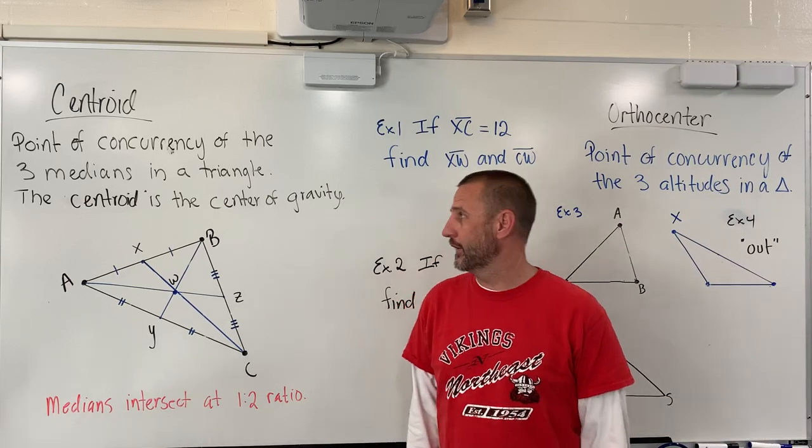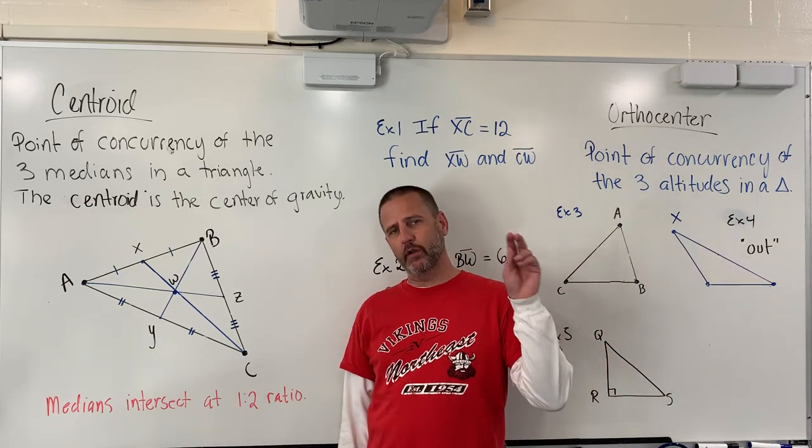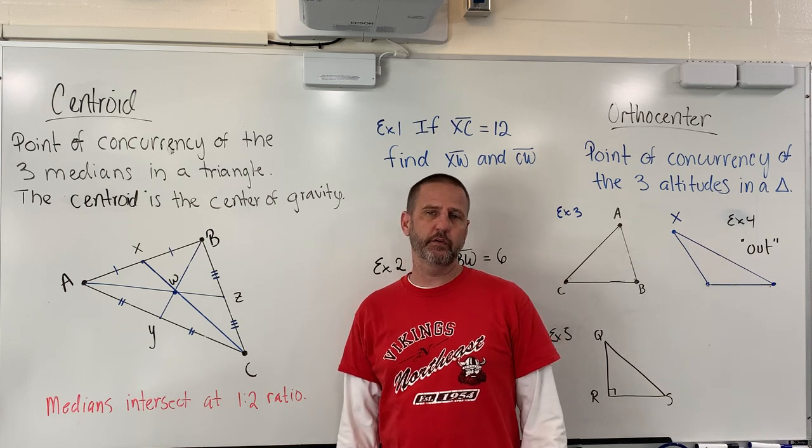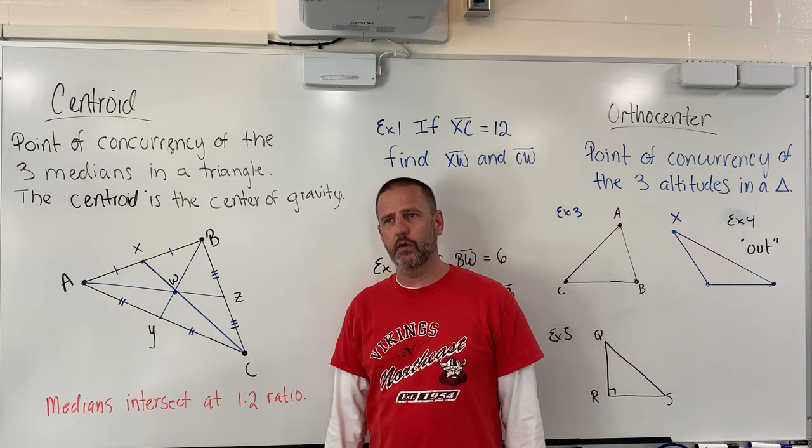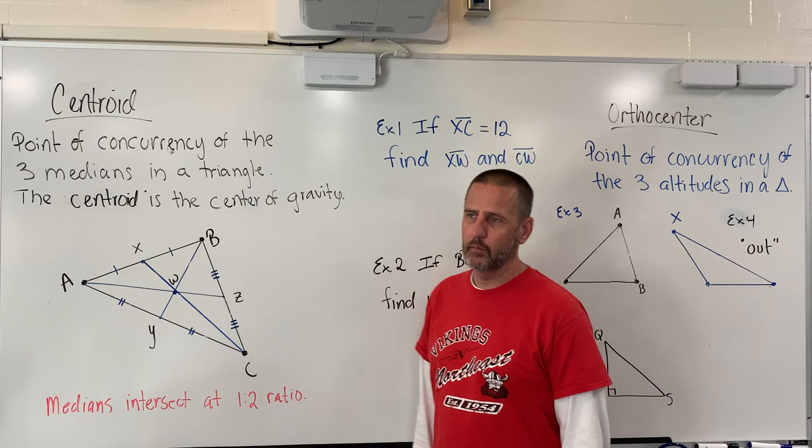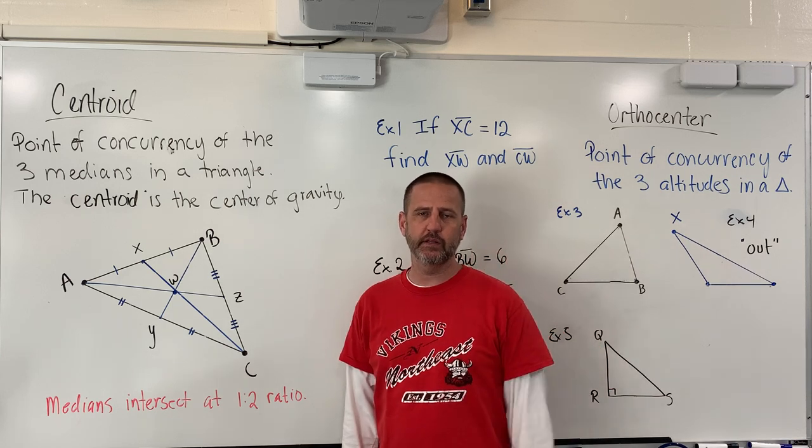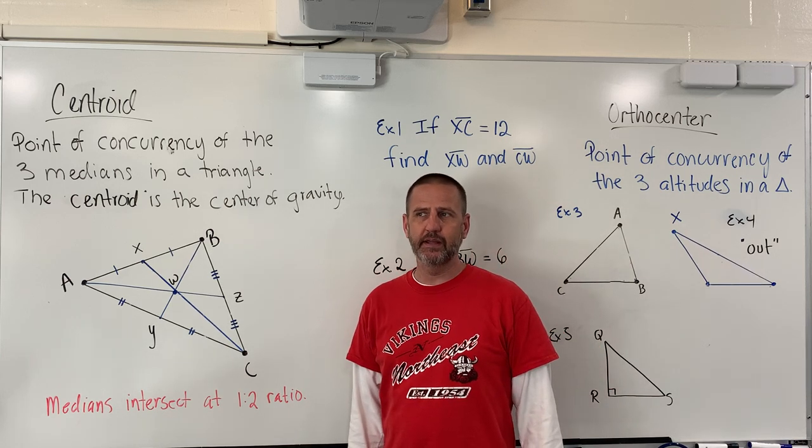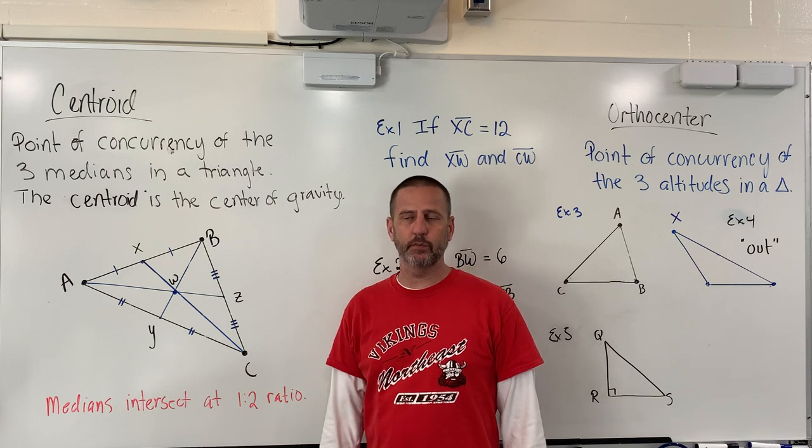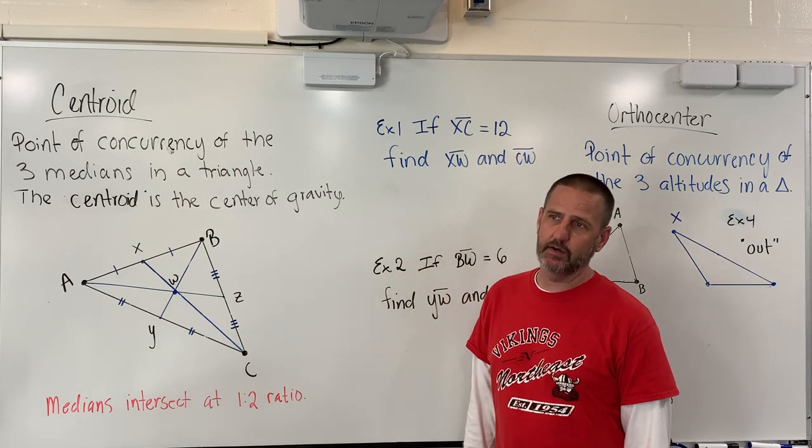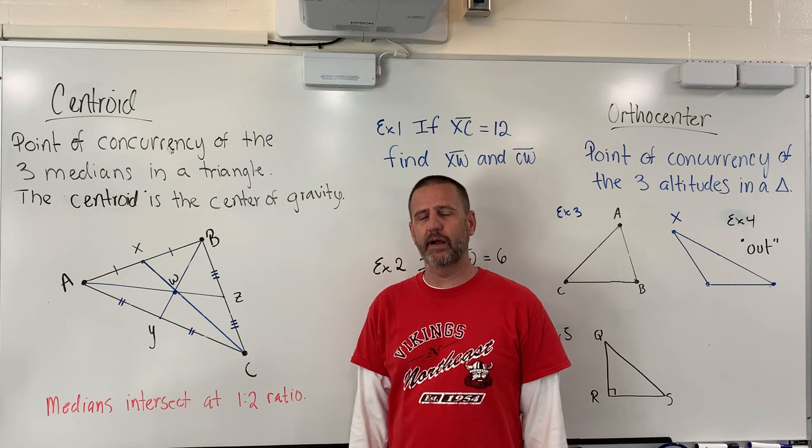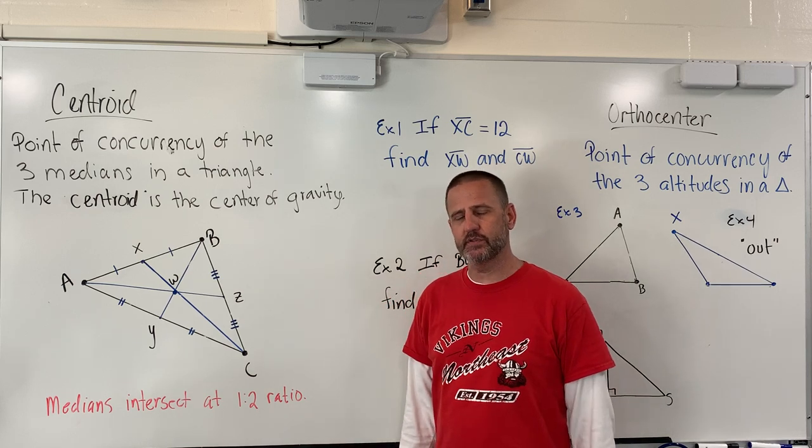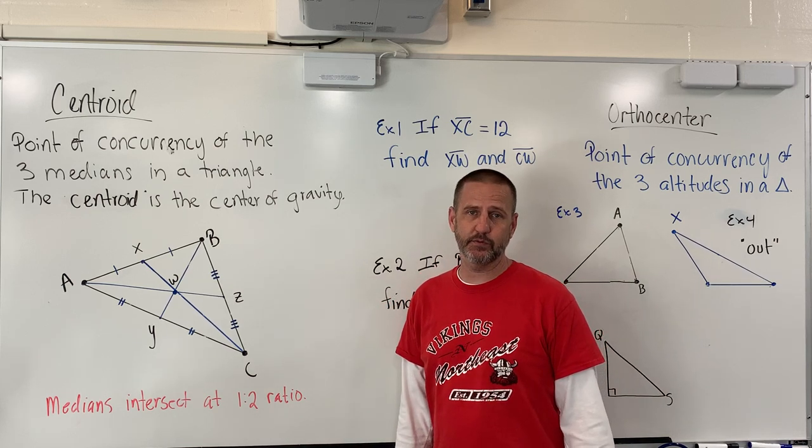Welcome back, it's me Mr. Treewan, here for another lesson in geometry. Today we're looking at two new points of concurrency. We've covered two so far, one called a circumcenter, which is where three perpendicular bisectors come together, and that puts us the same equidistant from each of the vertices. Then we looked at an incenter, which is where three angle bisectors come together, and that puts us equidistant from the sides of a triangle.